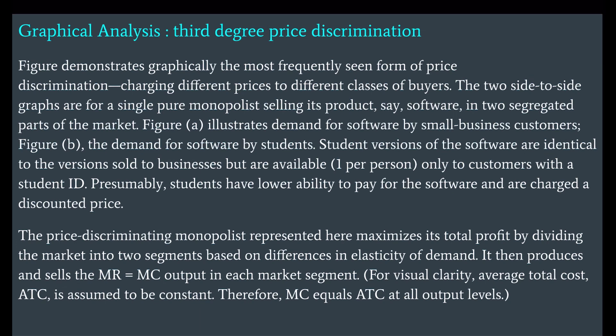Graphical analysis of third degree price discrimination demonstrates the most frequently seen form: charging different prices to different classes of buyers. The two side-by-side graphs show a single pure monopolist selling software in two segregated parts of the market — figure A shows demand by small business customers, and figure B shows demand by students. Student versions are identical to business versions but available only to customers with a student ID. For visual clarity, average total cost (ATC) is assumed to be constant, so MC equals ATC at all output levels.